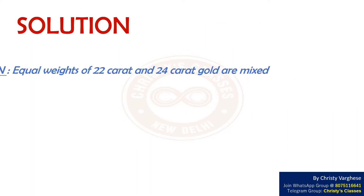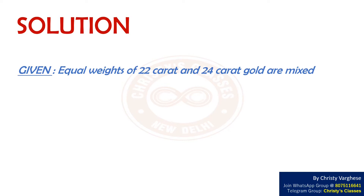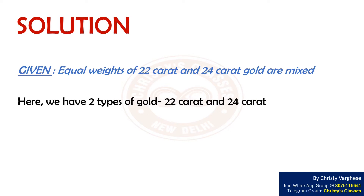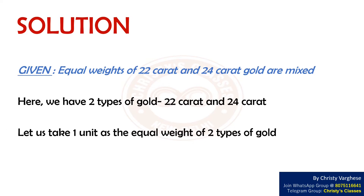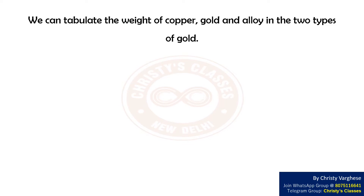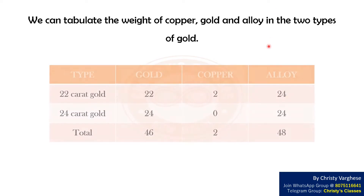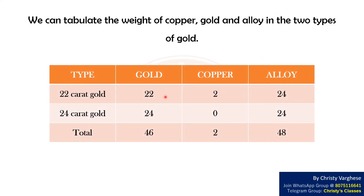Given that equal weights of 22 carat gold and 24 carat gold are mixed, we have two types of gold: 22 carat and 24 carat. Let us take one unit as the equal weight of each type. We can tabulate the weight of copper, gold, and alloy in the two types. 22 carat gold is an alloy of 22 parts gold and 2 parts copper by weight, and 24 carat gold is pure gold.